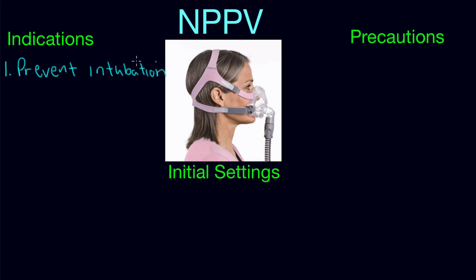Lots of bad things happen when we intubate a patient and ventilate them, including things like ventilator-associated pneumonias. We can also damage the alveoli or cause barotrauma. So anytime we can ventilate a patient using a mask, that's a much safer way to accomplish that. Keep in mind, if they do have a respiratory acidosis, the pH should be at least 7.26. If it's below that, we really should start considering invasive ventilation.